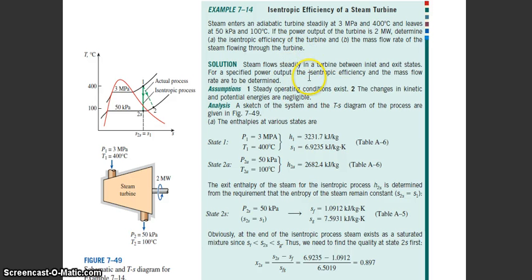First, make the assumptions. The first assumption is steady operation condition. Apply steady flow energy equation and also negligible kinetic and potential energy because the velocity is quite slow and the height of state 1 and state 2 is quite low.